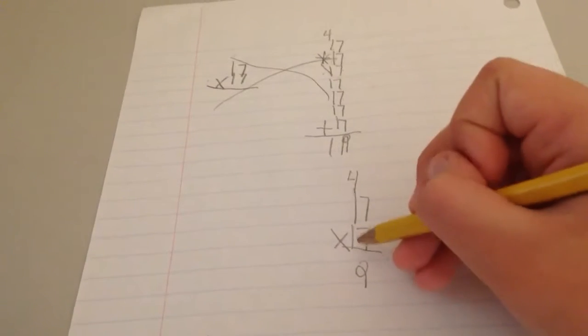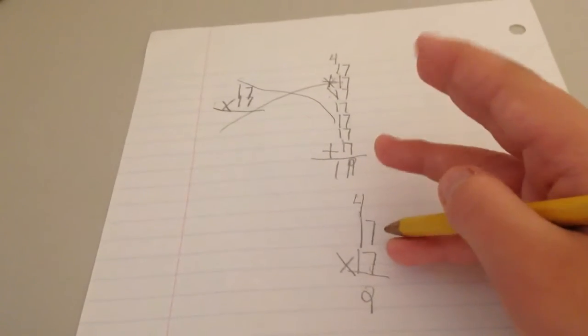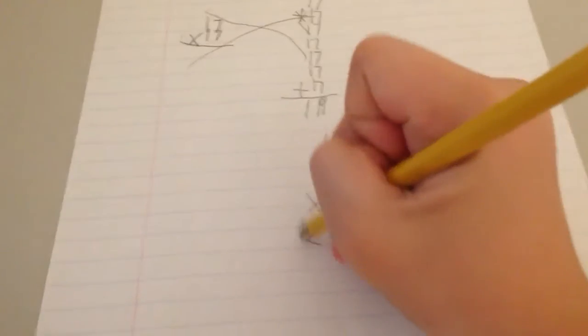So that's why. And then 7 times 7 is 49. 7, 8, 9, 10. 7 plus 4 is 12. So then you'll put a 2 and a 1.